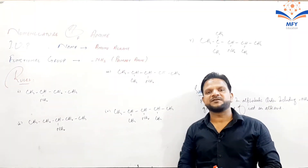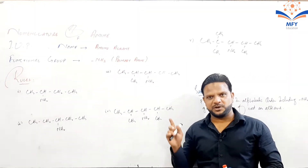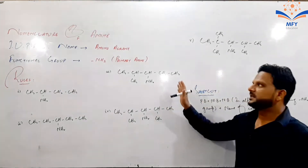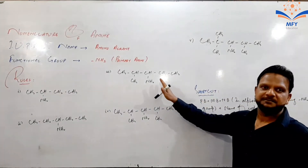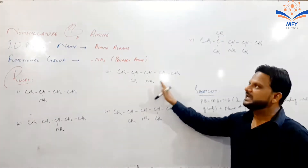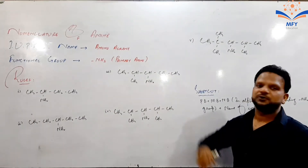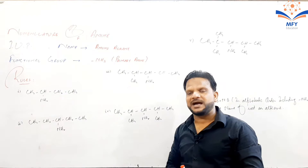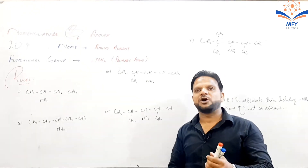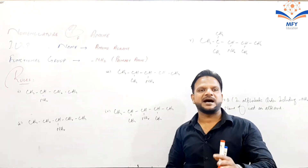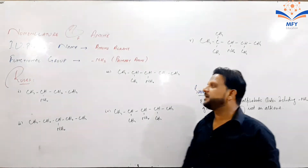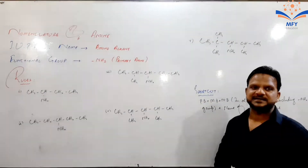Today we are going to start one of the most important topics of organic chemistry: nomenclature of aminoalkane, that is amine, by IUPAC system. Before this, we have completed the nomenclature of alkane, alkene, alkyne, alcohol, and alkyl halide by IUPAC system. Now we have the nomenclature of amine.